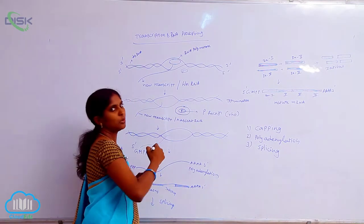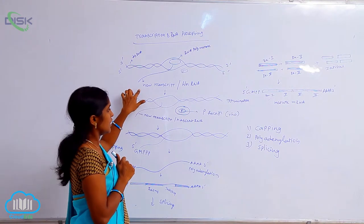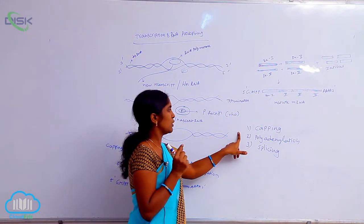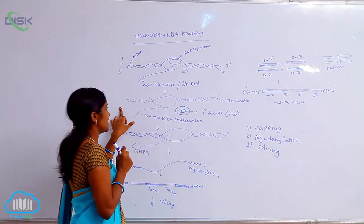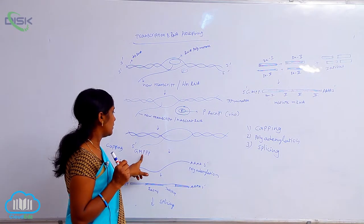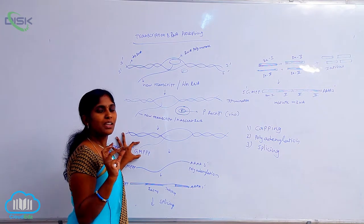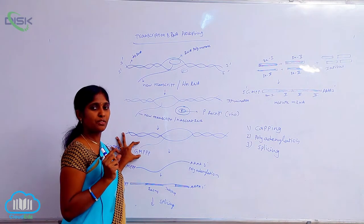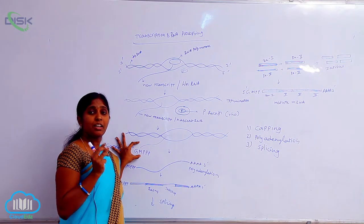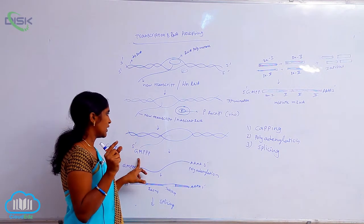Heterogeneous RNA contains both coding and non-coding sequences. After its production, within the nucleus it undergoes modification. The first processing step is capping. At the 5' end, a 7-methylguanosine triphosphate is joined to the 5' end of the mRNA, forming the cap. The function of the cap is to provide stability to the mRNA before translation, and the cap site also serves as the ribosome binding site.